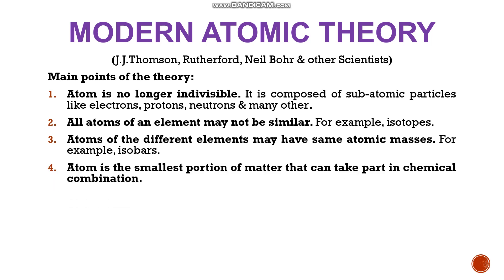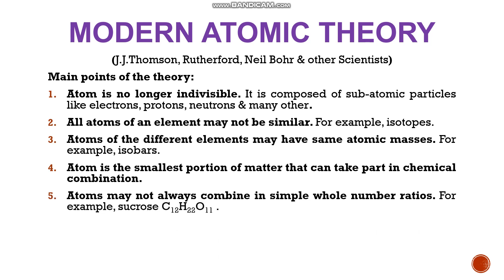The point that atom is the smallest portion of matter that can take part in chemical combination is still valid — although atom is not the smallest portion of matter, it is still the smallest portion that can take part in chemical combination. The fifth point is that atoms may not always combine in simple whole number ratios. For example, sucrose is C12H22O11 — the number of atoms of carbon, hydrogen, and oxygen are not in a simple whole number ratio. So atoms may not always combine in simple whole number ratios.